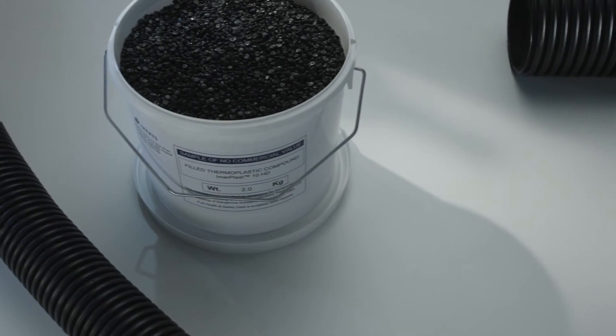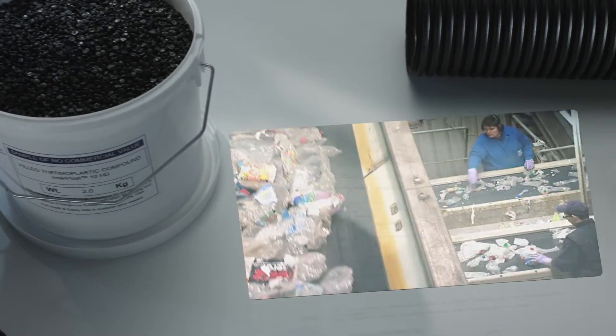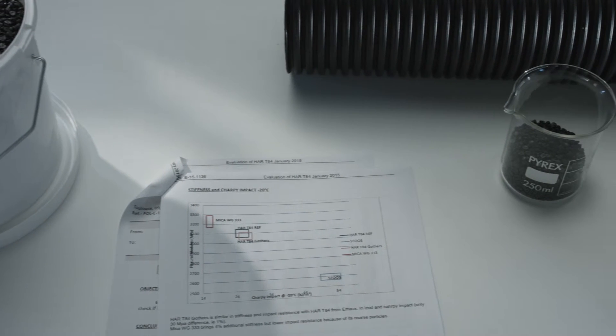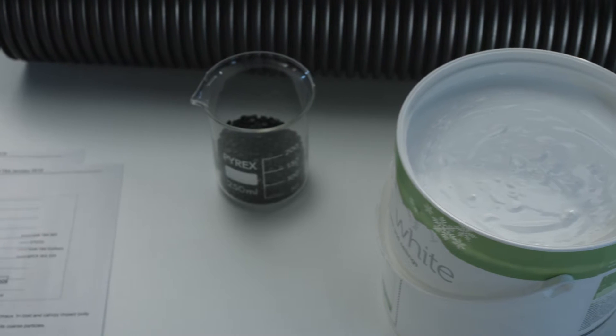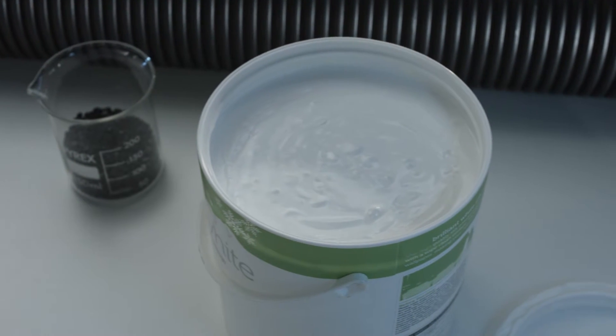Imerplast is an engineered mineral polymer compound proven to give recycled plastics better performance in such applications as the manufacture of pipes, decking, and plastic paint pots.